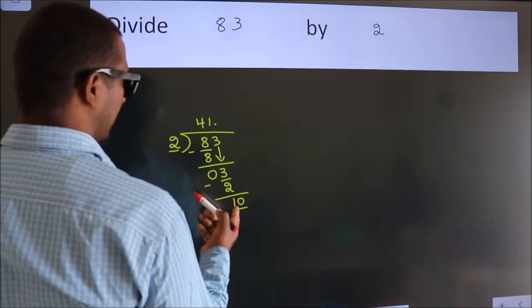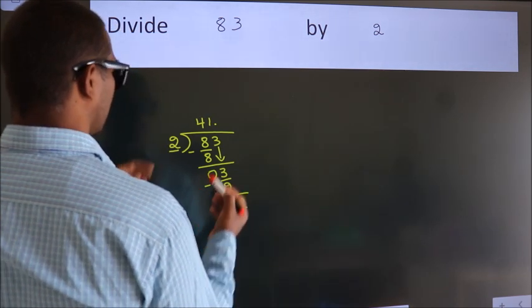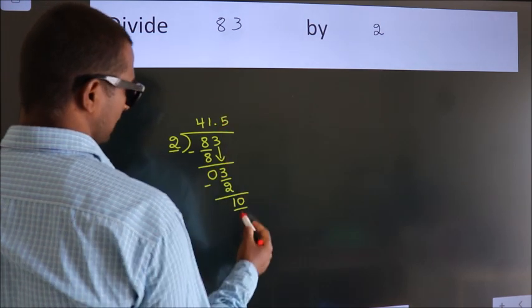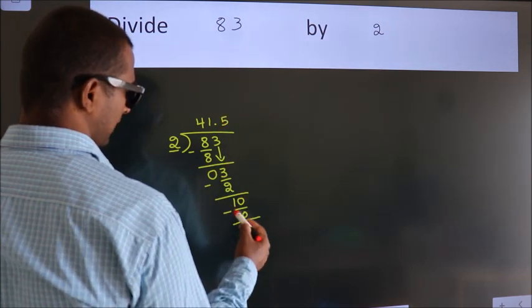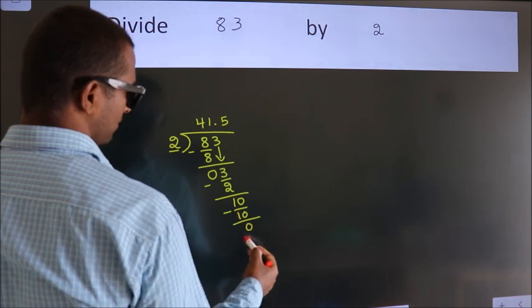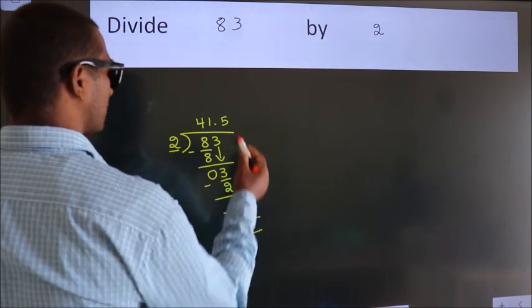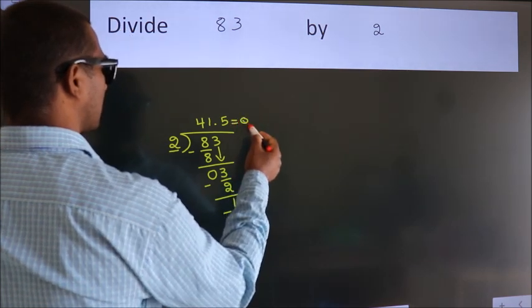When do we get 10 in 2 table? 2 fives, 10. Now, we subtract. We get 0. We got remainder 0. So, this is our quotient.